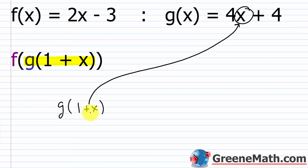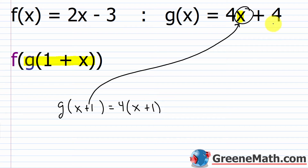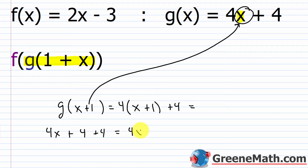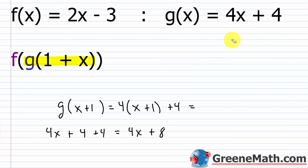So let's find g of 1 plus x, or g of x plus 1. This equals 4 multiplied by — I'm plugging in x plus 1 for x — so 4 times the quantity x plus 1, and then plus 4. So 4 times x is 4x, then plus 4 times 1 is 4, then plus 4. That gives me 4x and then 4 plus 4 is 8. So I get 4x plus 8. So g of x plus 1 equals 4x plus 8.